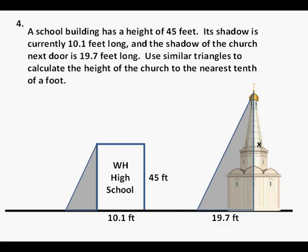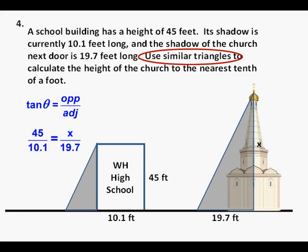Here's a drawing of the school and of a church with their shadows. I did have a student who used the tangent to solve the problem. He used arc tangent to find the angle of the shadow of the school building, then used the angle to find the height of the church building. However, the problem itself gives us a clue to a much easier method of solution, and that is by using similar triangles. To use similar triangles we set up 45 over 10.1 equals x over 19.7.